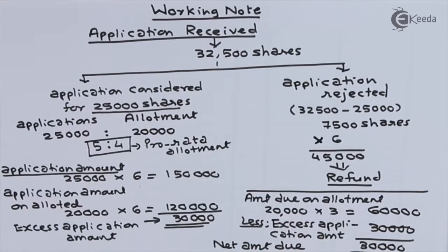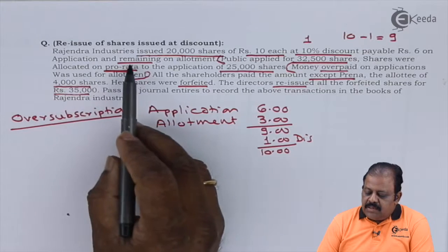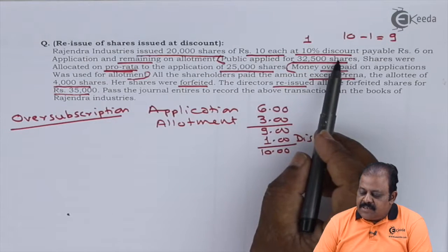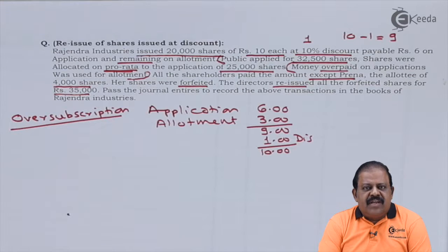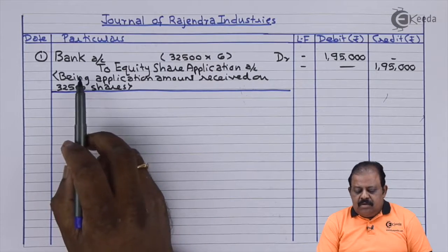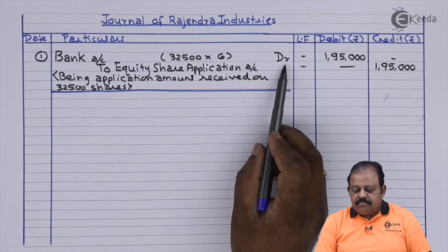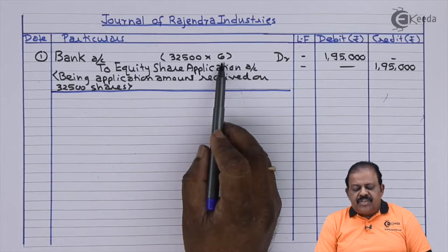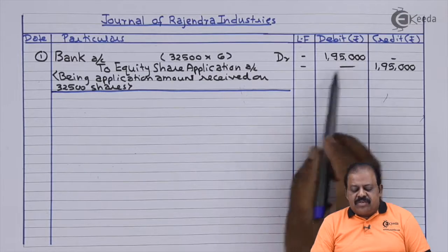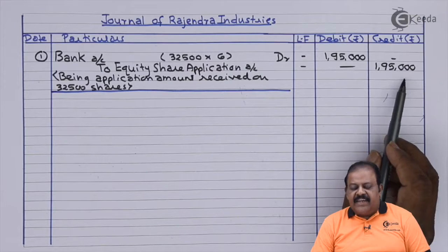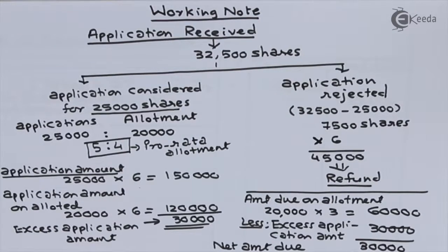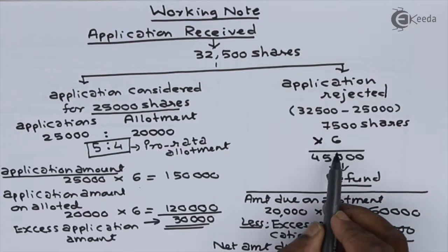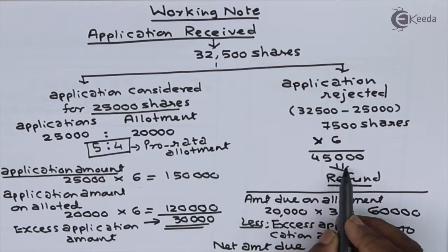Journal Entry 1 — for amount received on application: Bank Account Dr ₹1,95,000 (32,500 shares × ₹6) to Equity Share Application Account ₹1,95,000. Entry 2 — refund for rejected 7,500 applications: Equity Share Application Account Dr ₹45,000 to Bank Account ₹45,000.